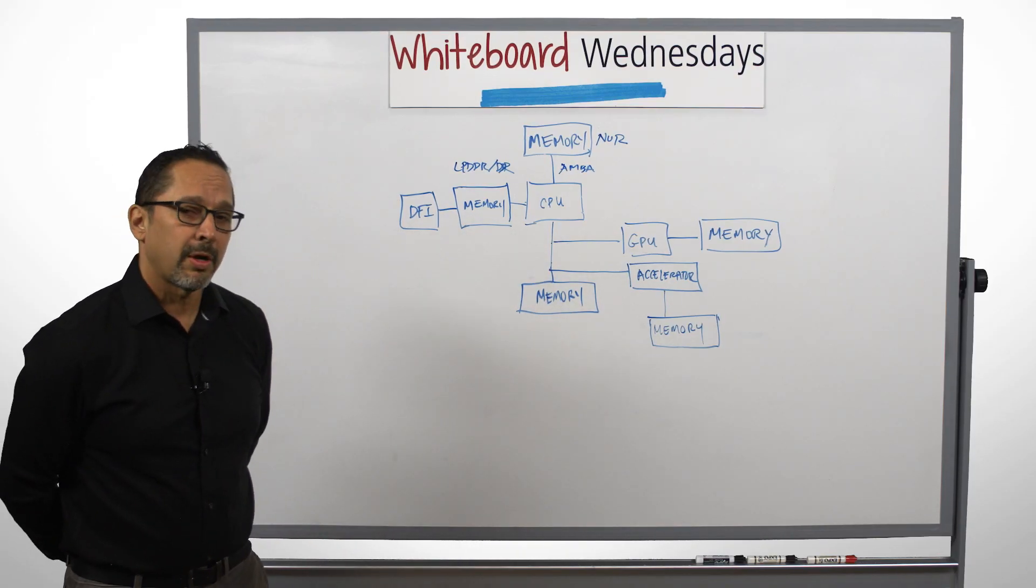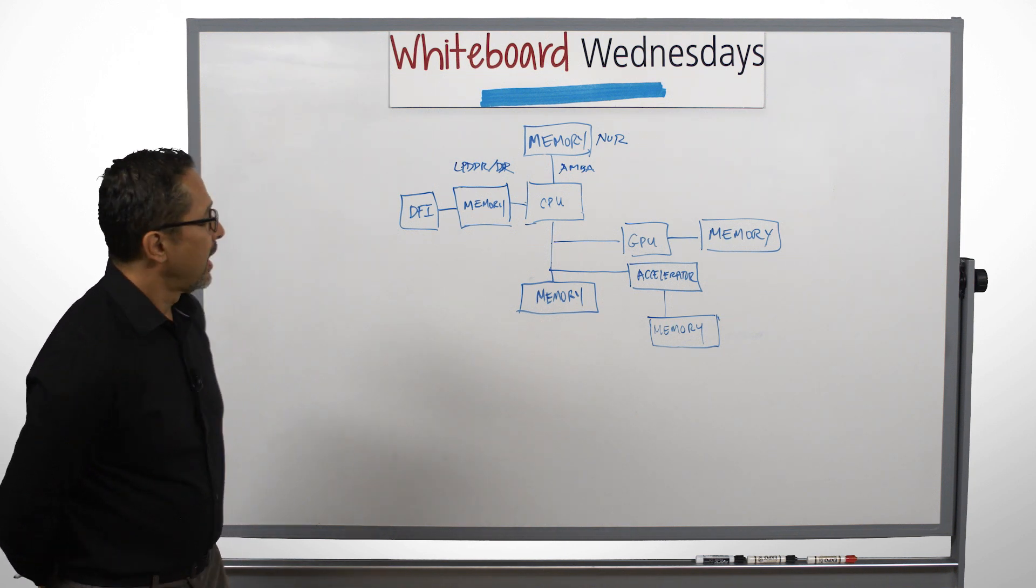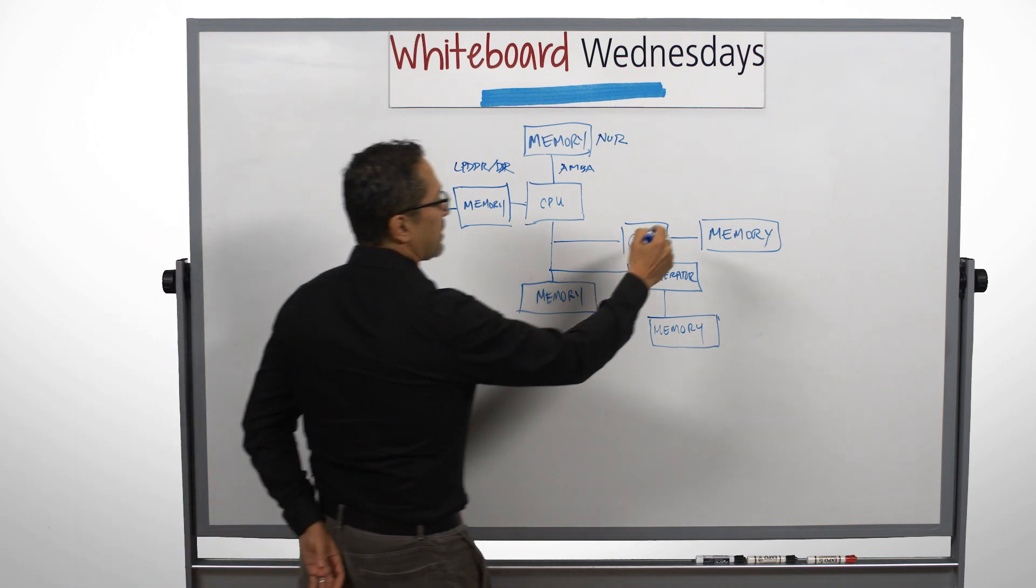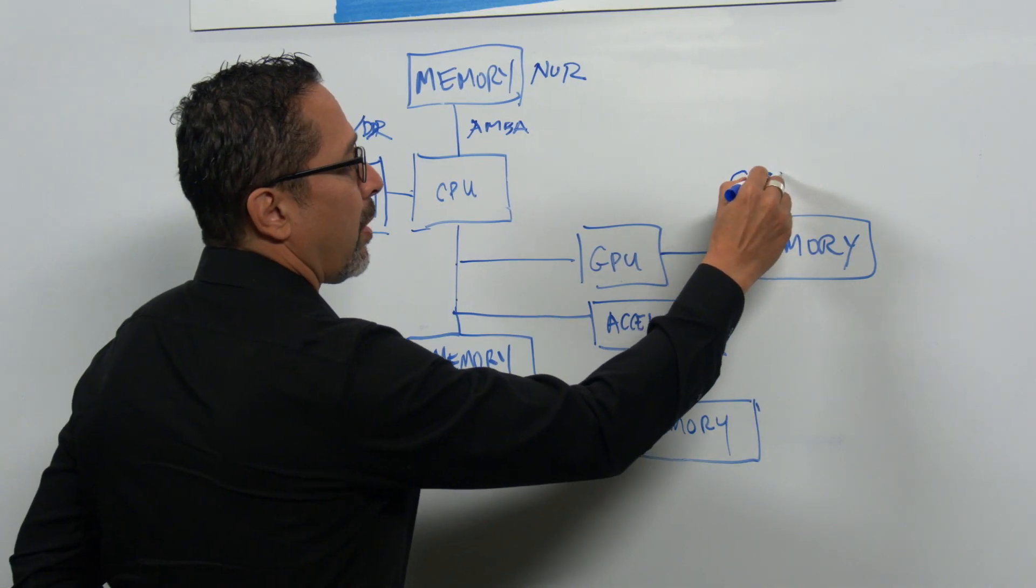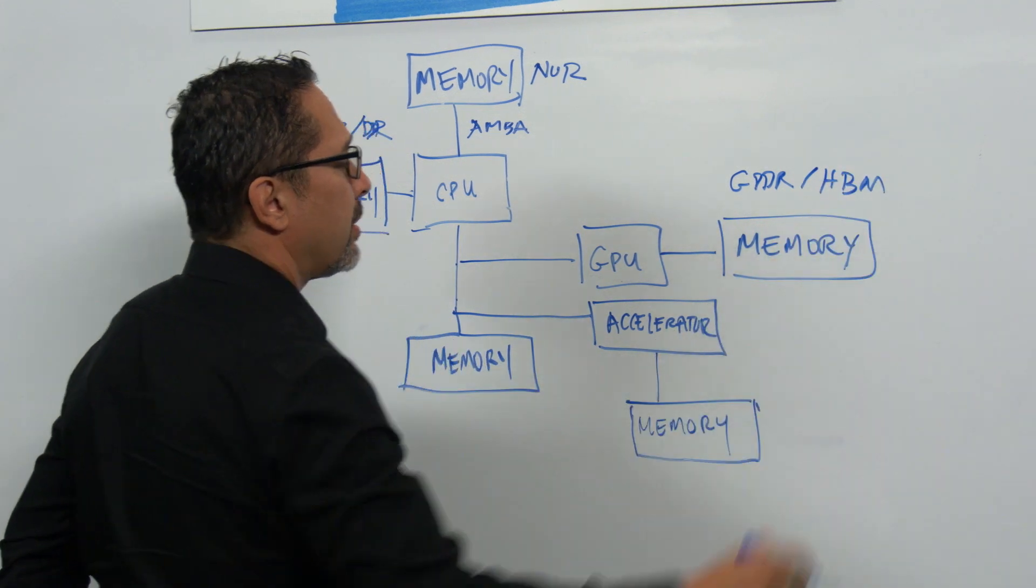On the GPU side, when you start looking at data center, the workloads get very data intensive. And in order to address the level of bandwidth that is required for that, we see new memories like GDDR and HBM.